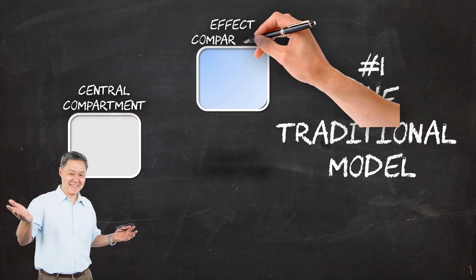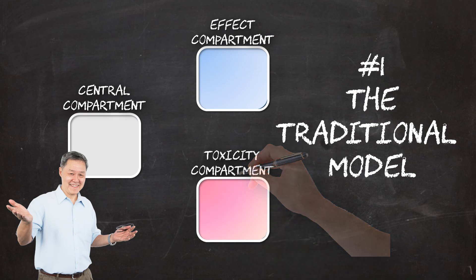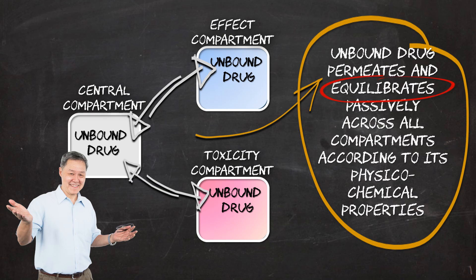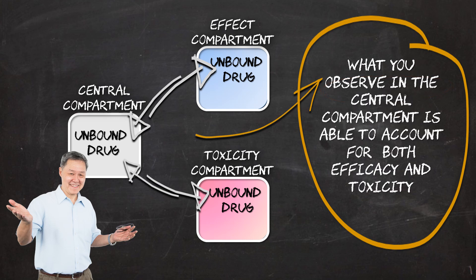In the traditional model, it is thought that the unbound drug concentrations freely and passively permeate across membranes and equilibrate between the various theoretical compartments of the body, because of the unique physical-chemical properties of the drug molecule. The key word here is equilibrate, because given time, the concentrations in the central compartment will be exactly the same as what you observe in the effect compartment as well as the toxicity compartment. So what you observe in the central compartment adequately explains the effect as well as the toxicity you may expect.